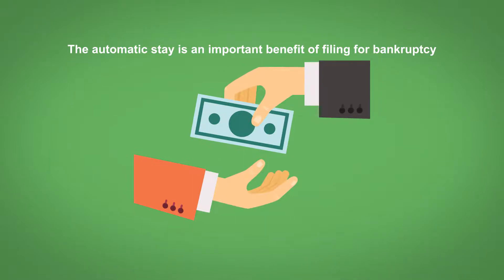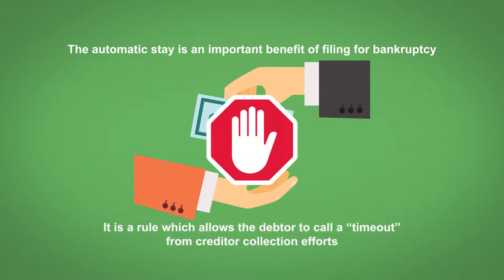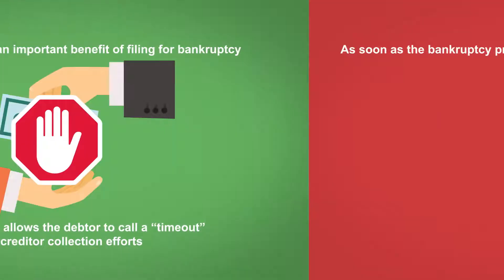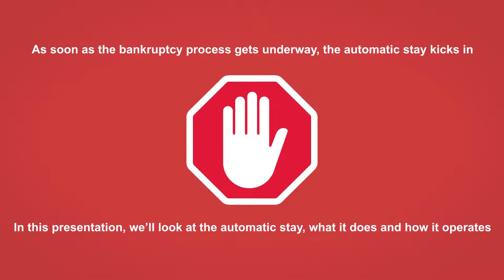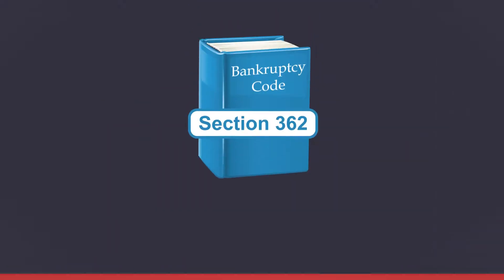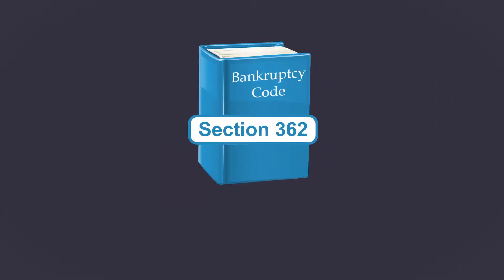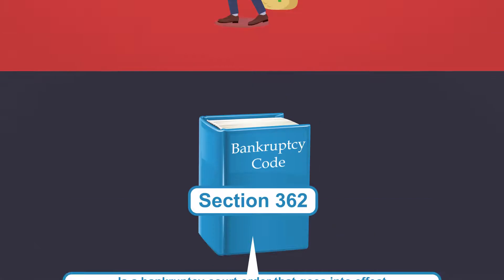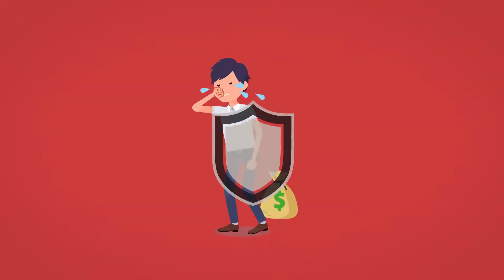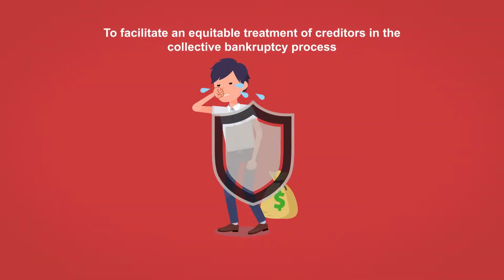The Automatic Stay is an important benefit of filing for bankruptcy. It's a rule which allows the debtor to call a timeout from creditor collection efforts. As soon as the bankruptcy process gets underway, the Automatic Stay kicks in. An Automatic Stay under Section 362 of the United States Bankruptcy Code is a bankruptcy court order that goes into effect as soon as a party files for relief under any chapter of bankruptcy. It protects the debtor and his assets from creditors to facilitate an equitable treatment of the creditors in the collective bankruptcy process.